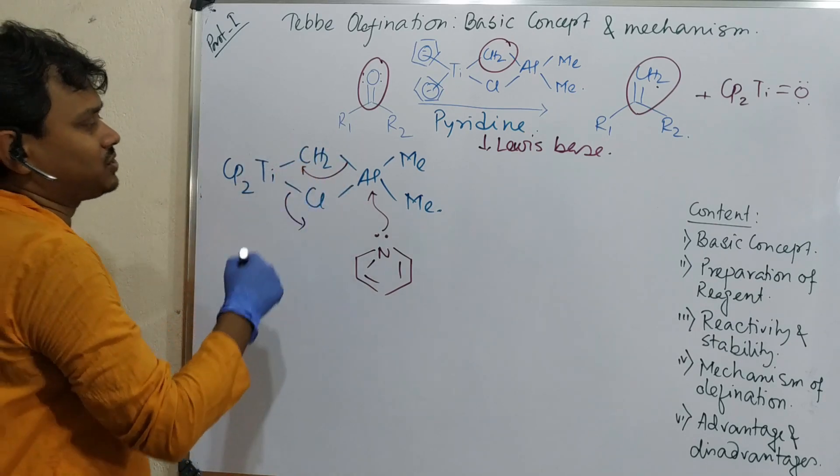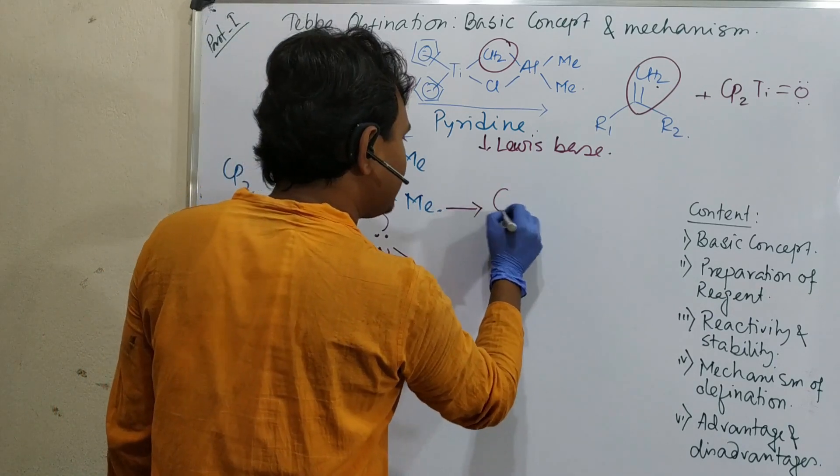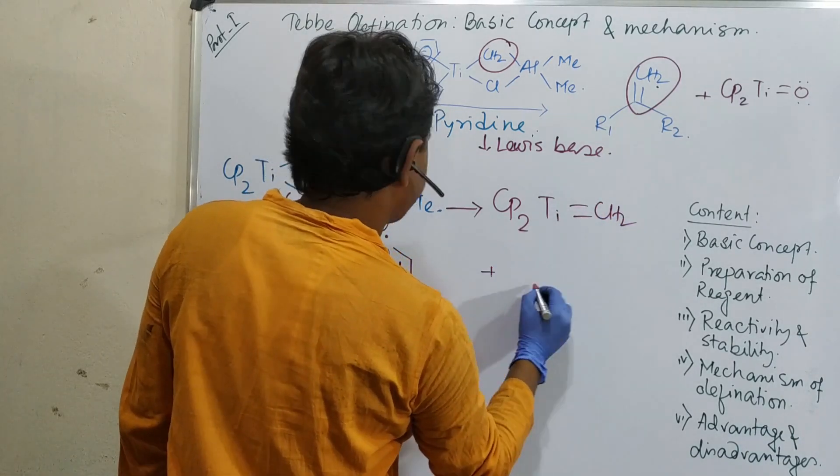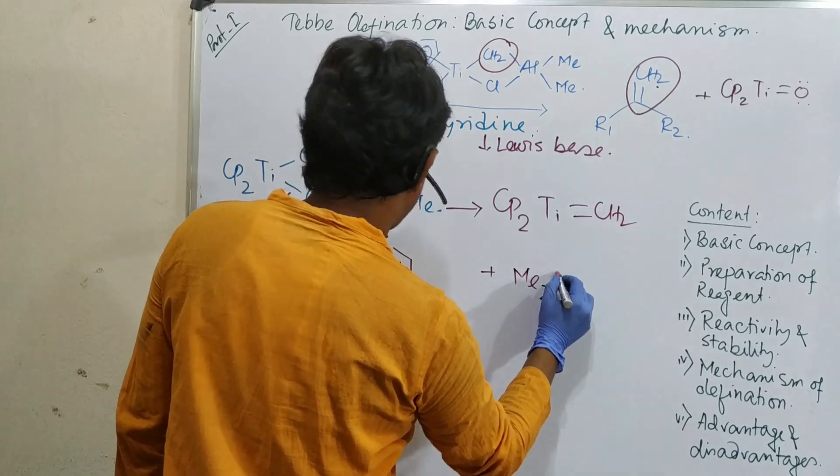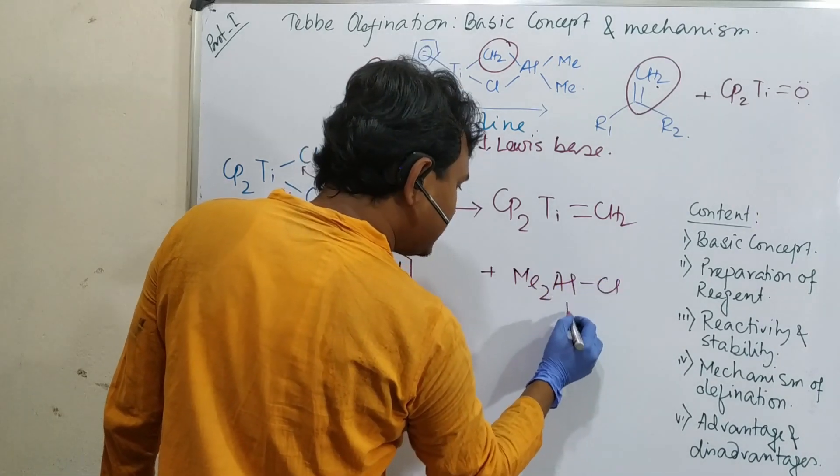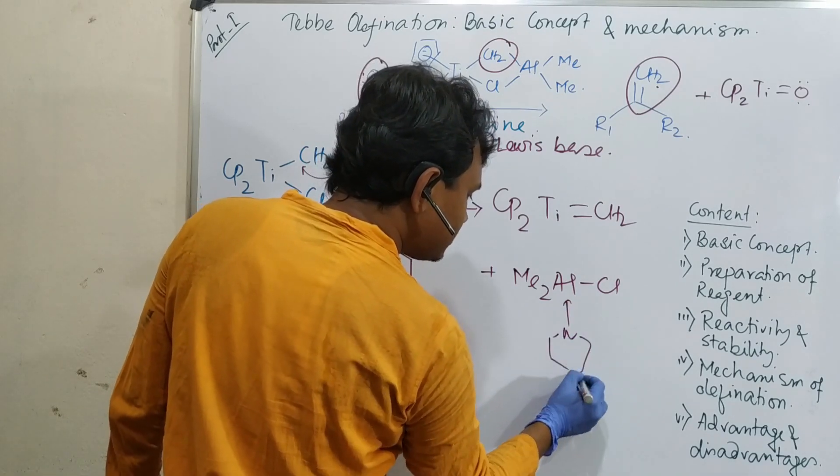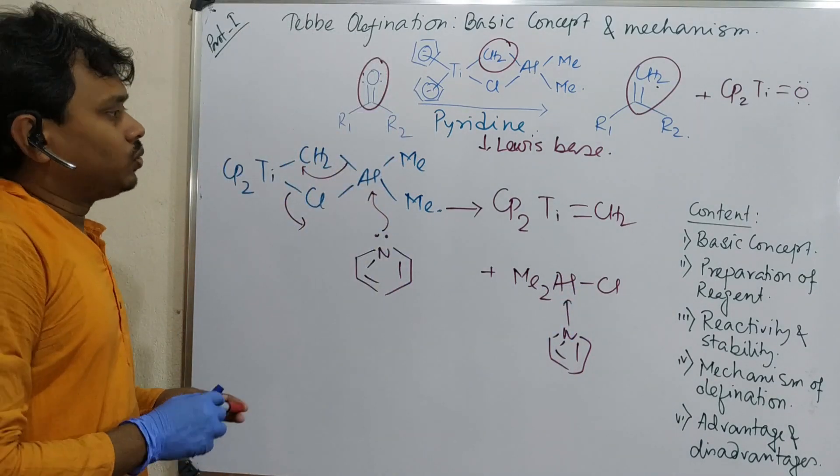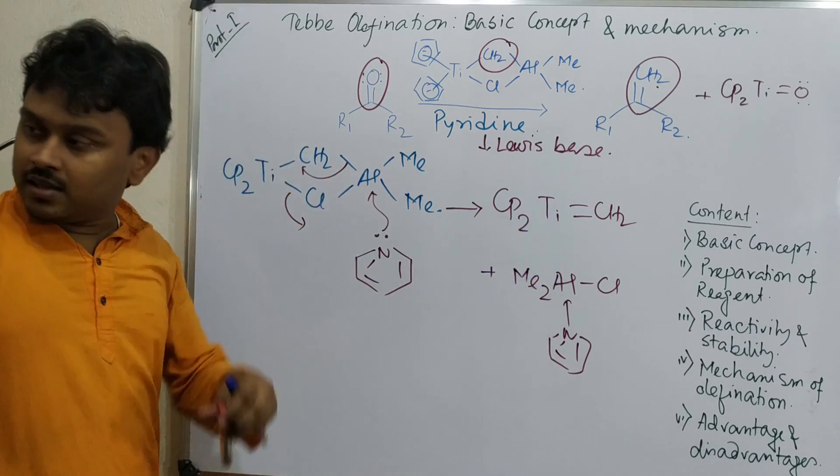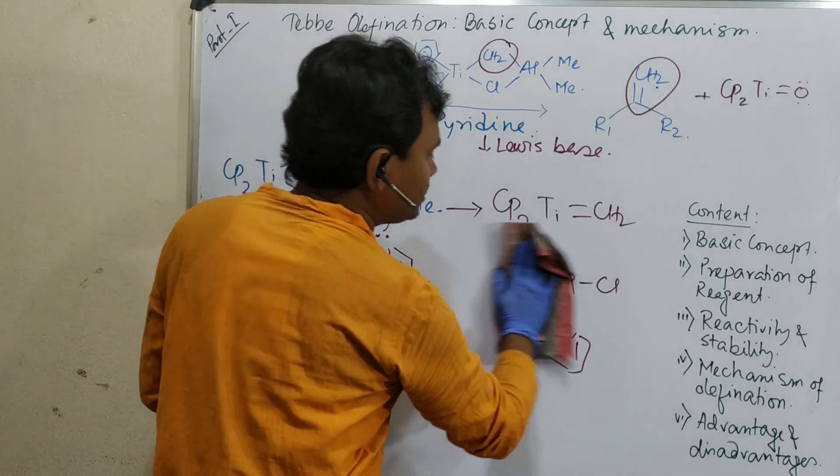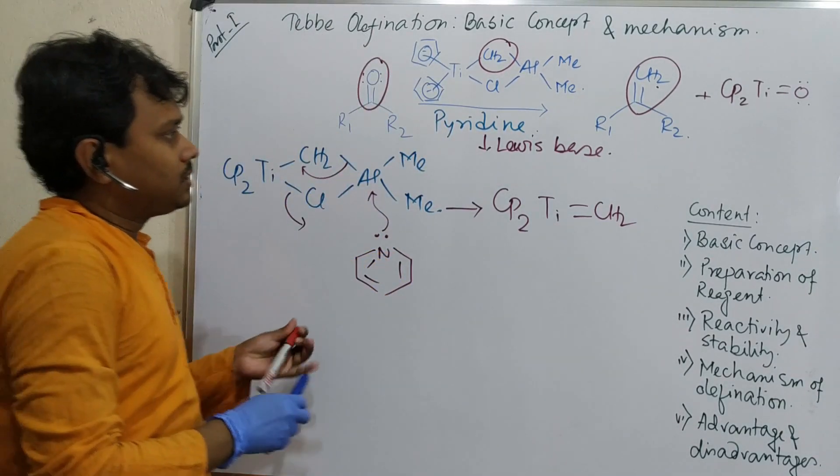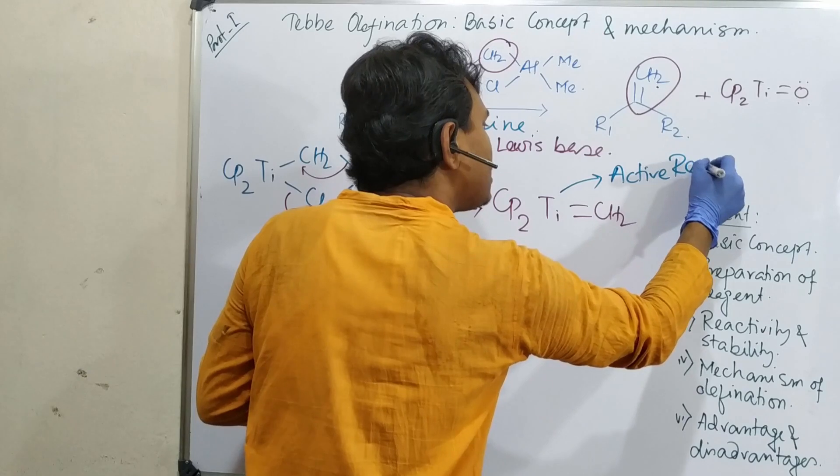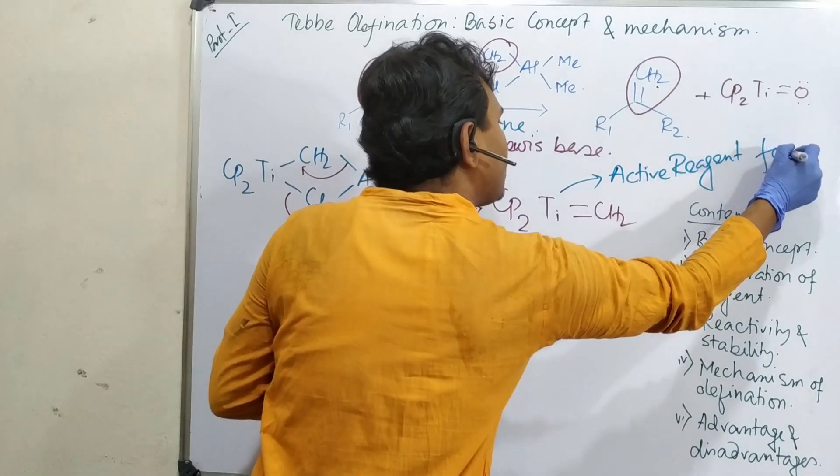It's not well established that how this process happens, but based on my logical understanding I am saying that it will happen. In this way what it will result? It will result Cp2Ti double bond CH2 plus this dimethyl aluminum Cl coordinated with this pyridine. Because in this case also aluminum is sextant. So in this way this aluminum will fill up the octet. So we got how to prepare this Petasis, this actual active reagent. Actually this is the active reagent, please keep it in mind. This is the active reagent for olefination.